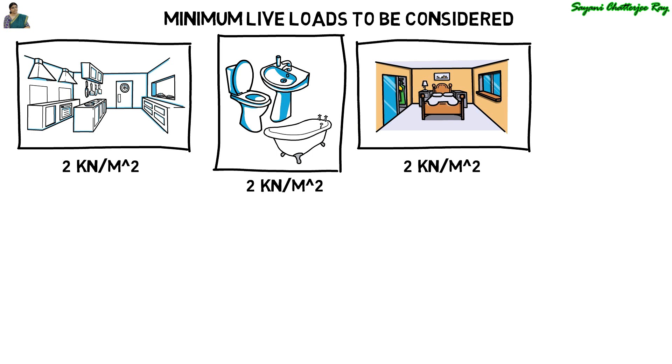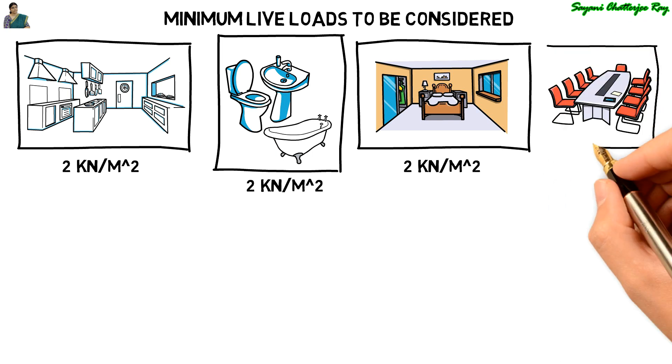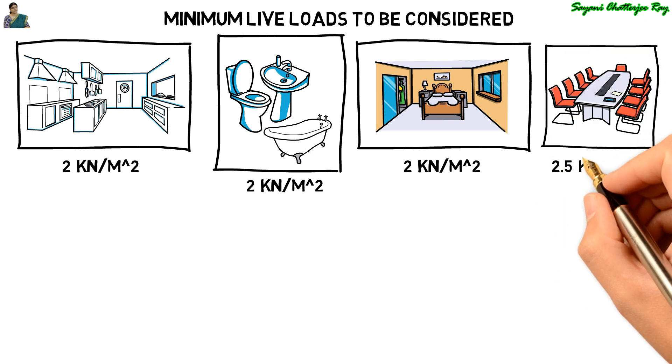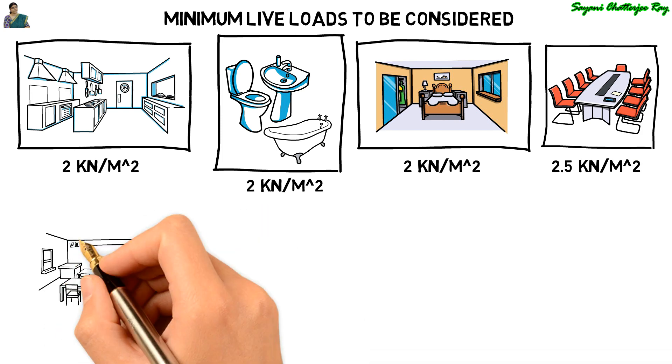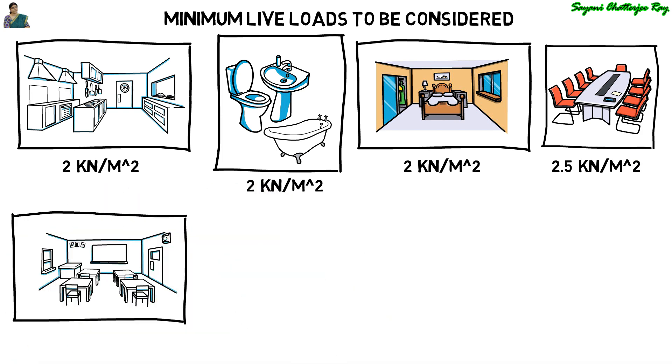For office rooms in hotels, hospitals, and business buildings with separate store, it is 2.5 kN per meter square. For classrooms in schools, colleges, and institutions, the UDL load is 3 kN per meter square.